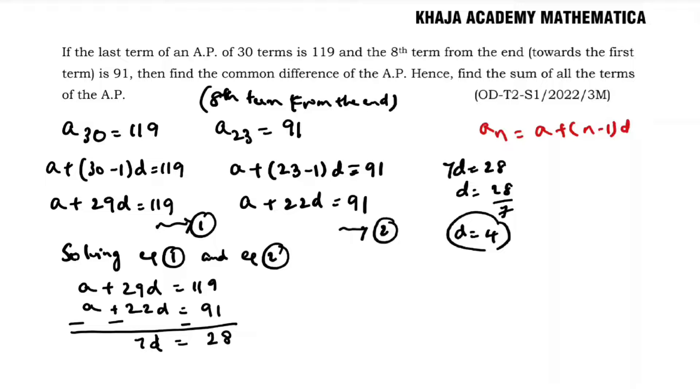Now if I substitute here in the second equation: a + 22d = 91. a + 22(4) = 91. a + 88 = 91. So a = 3.